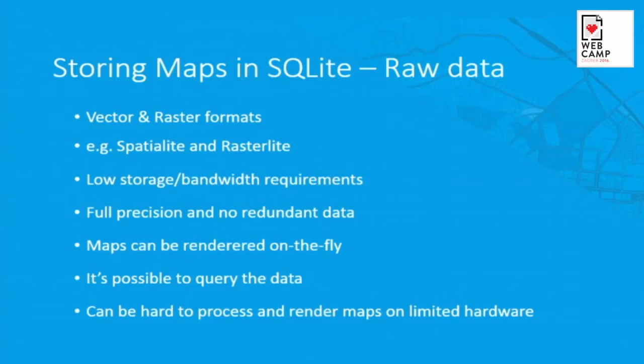So the idea is that we actually store raw data. So that table from the first slide with all the attributes and geometry we store it in the SQLite. There are some nice extensions like spatialite and rasterlite which are spatial engines or extensions for the SQLite. With this approach, you get the lowest possible storage requirement and bandwidth requirement because you are not putting any redundancy in the database. You are putting the original data with the full precision. So you can render maps from it on the fly. You can also query the data. So it's not just map rendering, but if you need to access some kind of attributes or geometries, you can do that directly on the SQLite database.